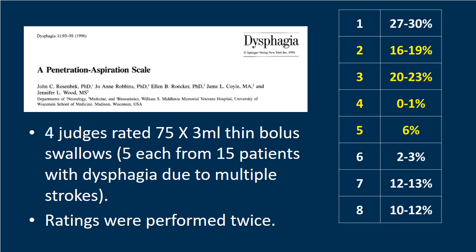When you do, you'll discover that there were originally 9 levels on the scale and they ultimately decided to collapse that to 8 levels. The place where there was a possible additional level is around the score of 6. Today the scale describes a score of 6 as material that enters the airway and travels below the true vocal folds but is then ejected either into the supraglottic space or out of the airway — those two ultimate locations were originally two different possible scale scores.